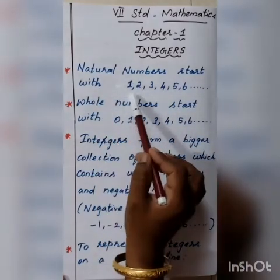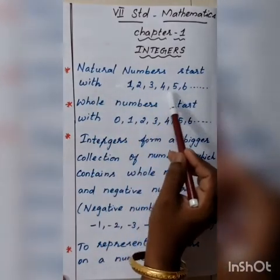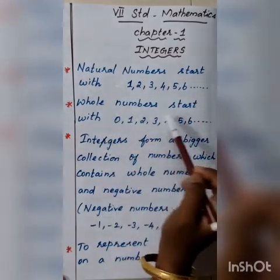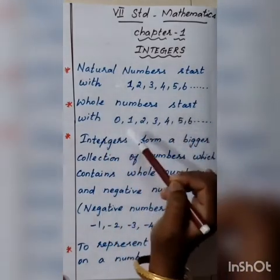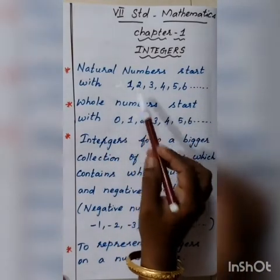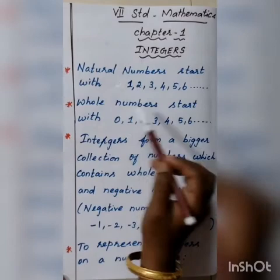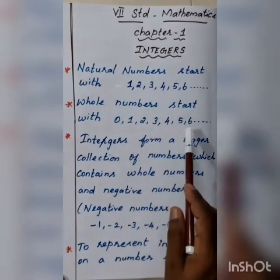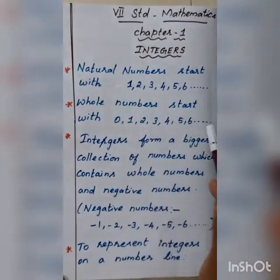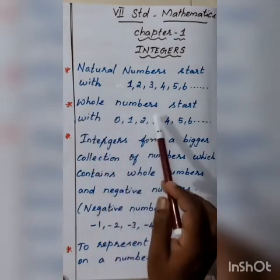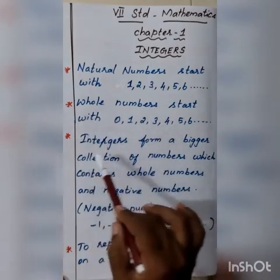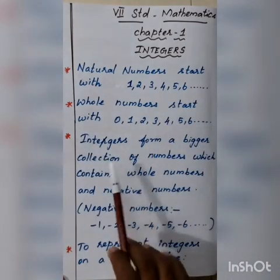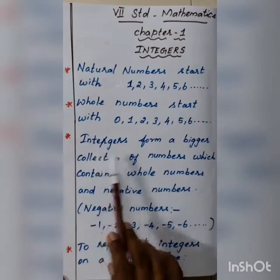Natural numbers start with 1, 2, 3, 4, 5, 6 and so on. And the whole numbers start with including 0 in the natural numbers. So 0, 1, 2, 3, 4, 5, 6 and so on — these numbers are whole numbers.